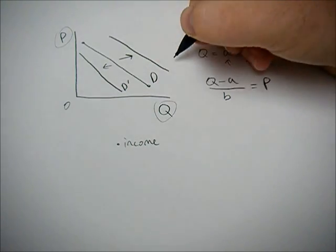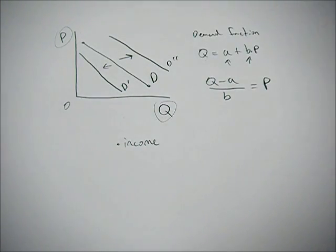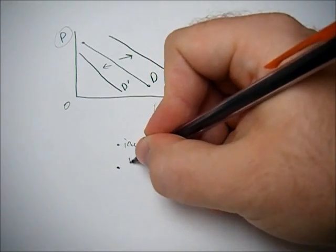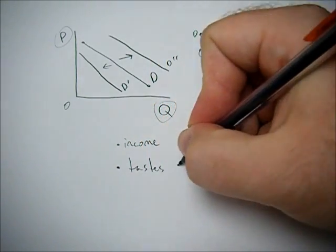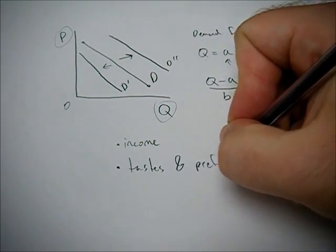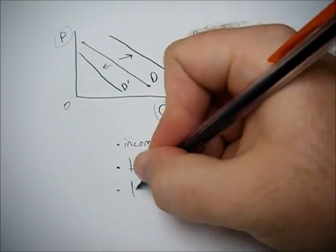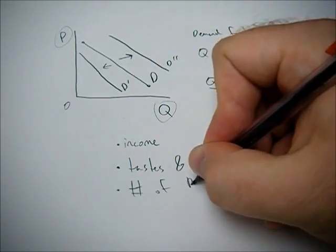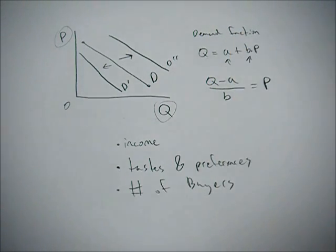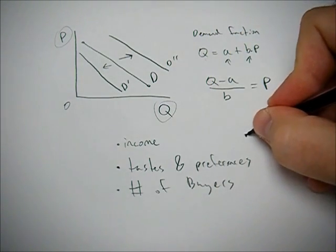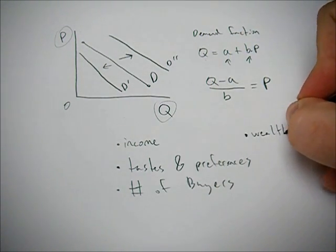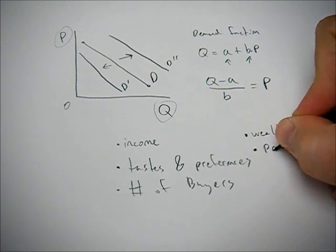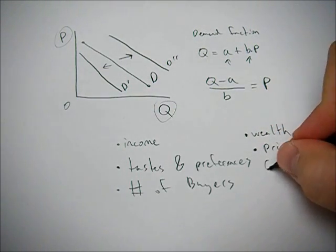Either left or right, depending on if income goes up and down. What else is exogenous? Tastes and preferences. Number of buyers. Perhaps wealth.